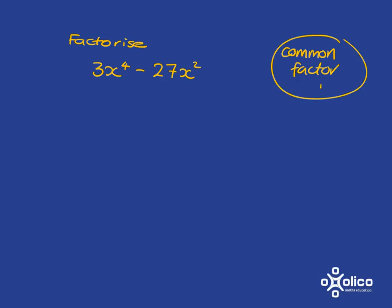Just remember to always look for that first. In this case we can see that 3 is in both of those and x-squared is in both of those terms. What you'll then be left with here is x-squared and from here 9. Then you recognise immediately that this x-squared minus 9 is your difference of two squares, so you know how to factorise it automatically.